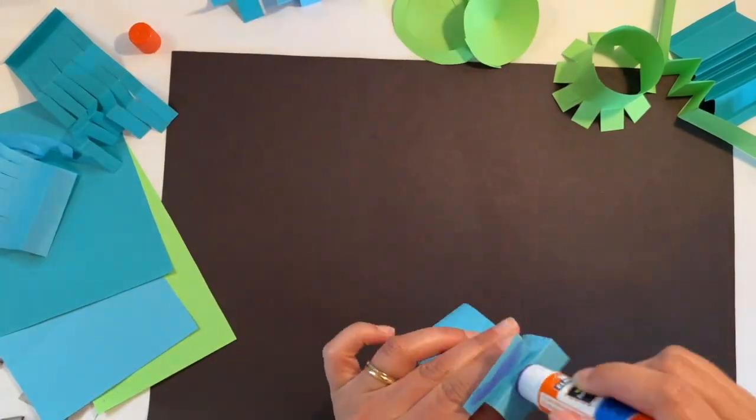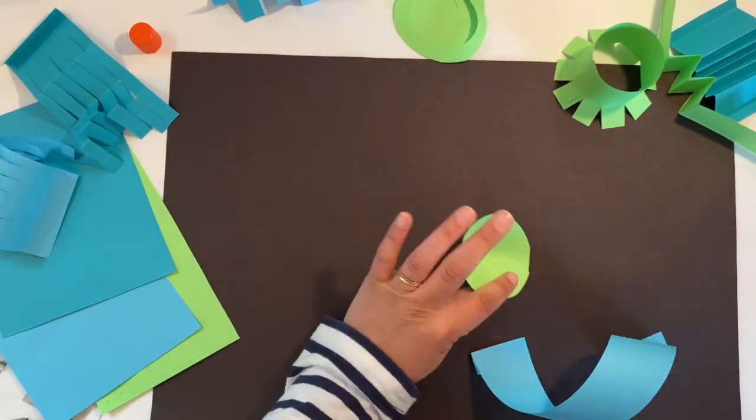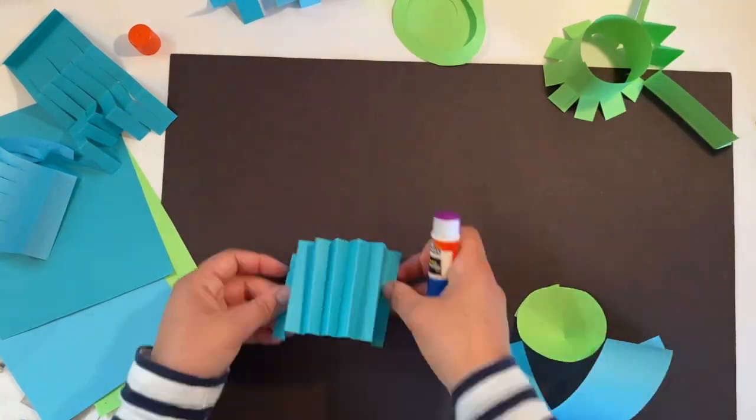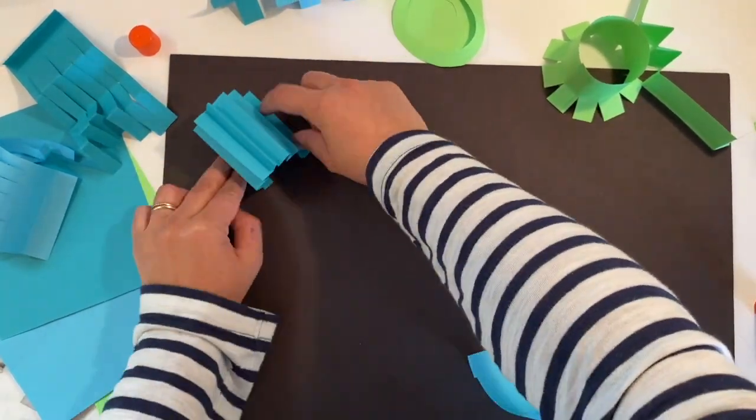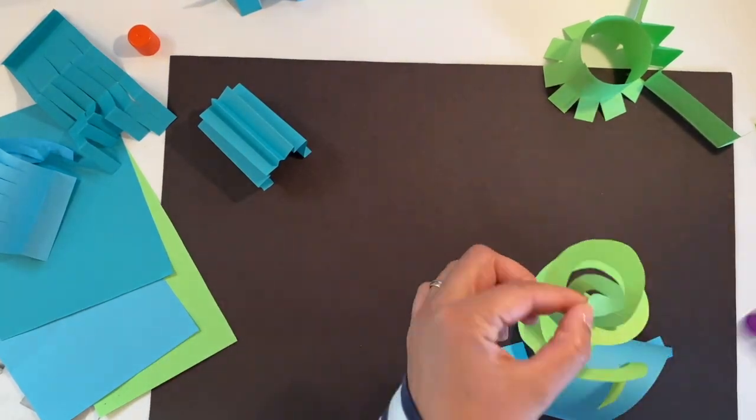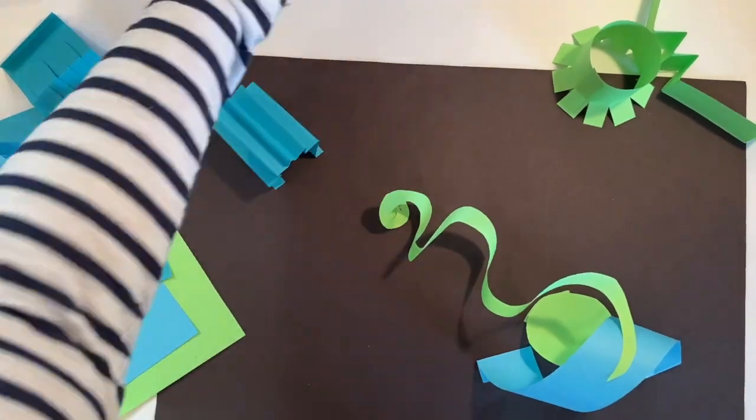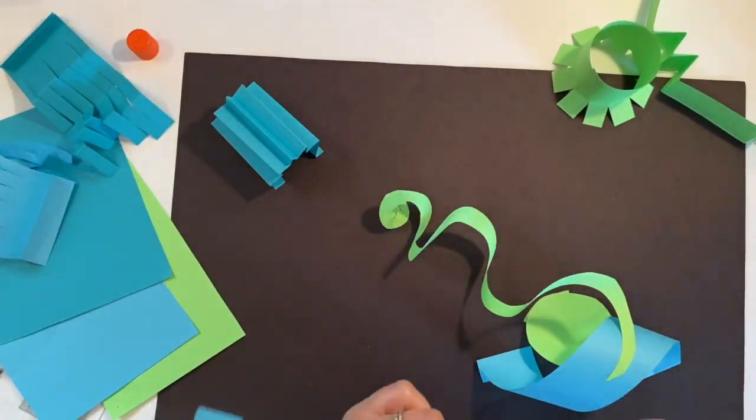Okay, now it's time for gluing our shapes, and it's your call where to place them. I like overlapping my shapes, so you get to see how I start assembling. Just choose randomly and see what works for you. Have fun with it.